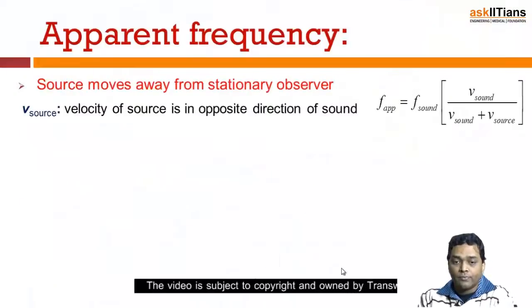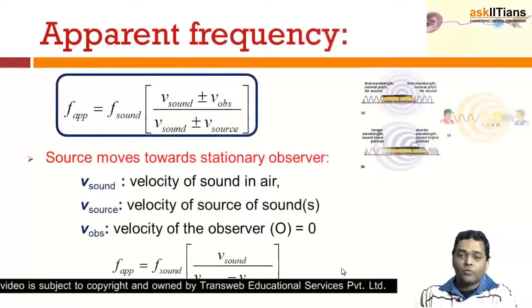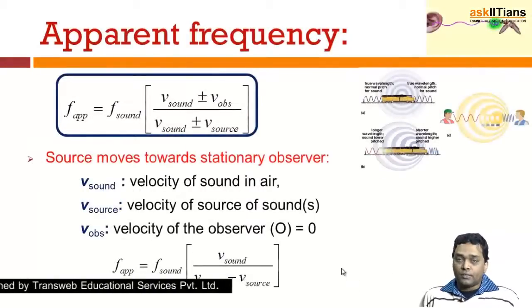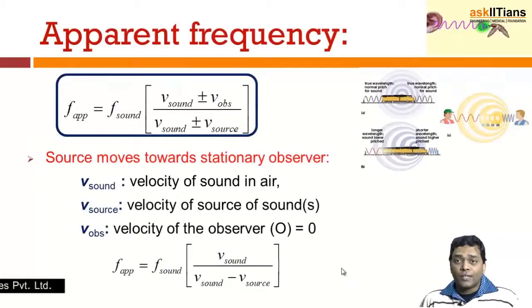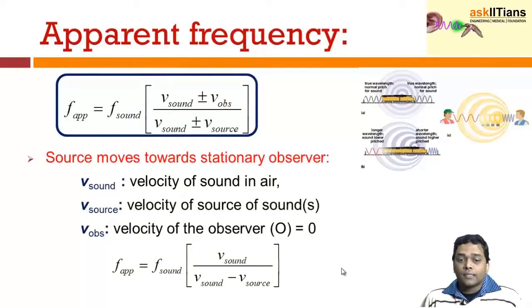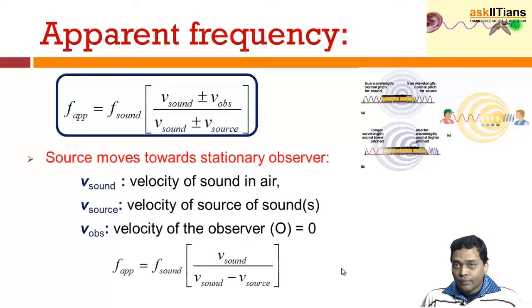When we talk about the apparent frequency, apparent frequency is the frequency that is observed under the circumstance when there can be an observer moving towards the source or away from the source.